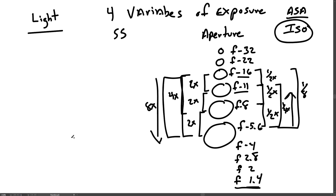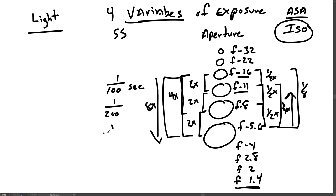The shutter is a door that opens and closes. When it opens, it allows light to flow through the aperture, and when it closes, it blocks out the light. That is also variable — something you can change. A typical shutter speed is 1/100th of a second. You could use 1/200th, 1/400th, 1/800th of a second, and so on, or 1/50th, 1/25th, and so on. These are typical shutter speeds.